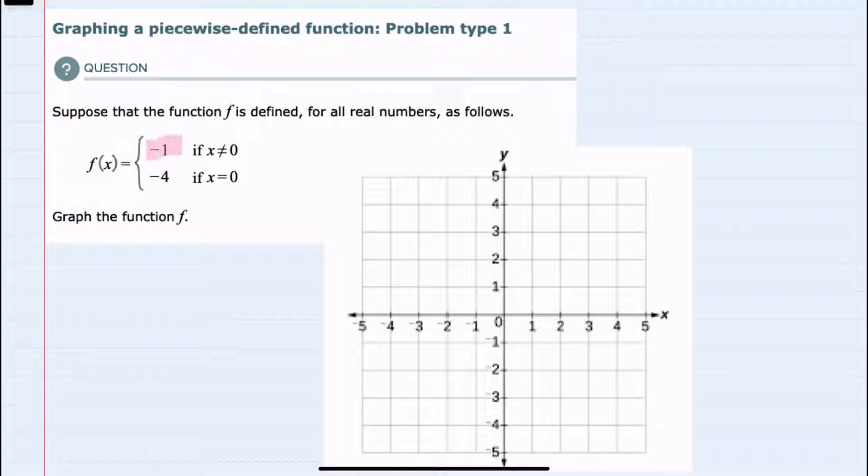So to start, I'll take the top piece, which is where f(x), which is our y value on the graph, would equal negative 1. This would be a horizontal line through the value y equals negative 1.